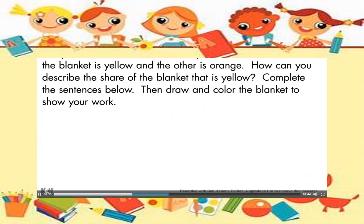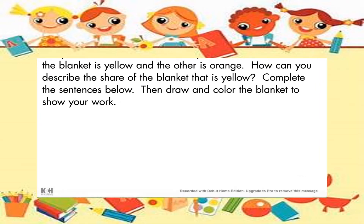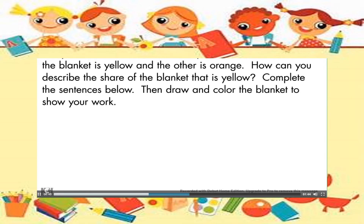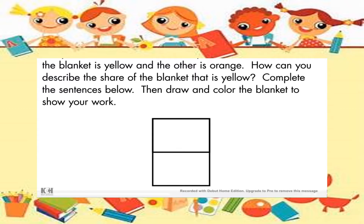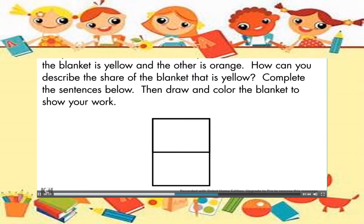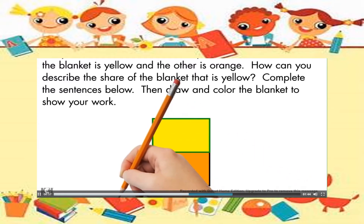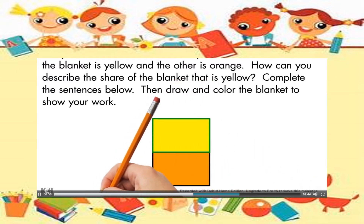This problem is key because students are asked to draw a picture to model a real-world problem involving equal shares. To do this, they need to use what they know about halves, or two equal shares of a whole. Listen and look for students who model the problem by drawing and coloring a picture to show a blanket divided into two equal shares — one yellow and one orange — then use their picture to complete the sentences, noting that one of the two shares is yellow.